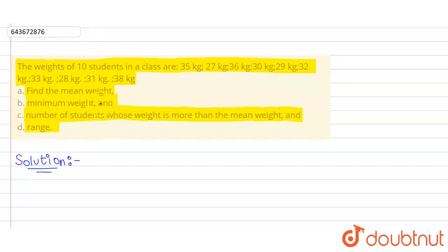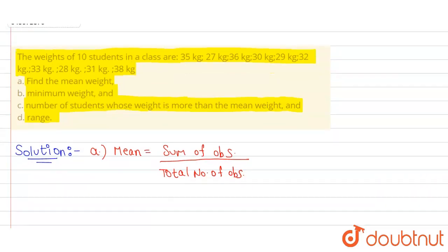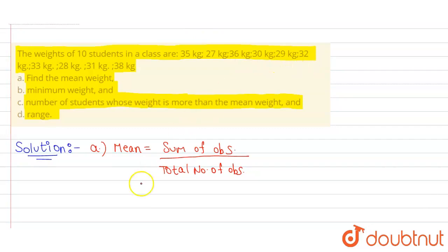First part is, we have to find mean. The formula of mean is sum of observations divided by total number of observations. Sum of observations means sum of all these numbers: 35 plus 27 plus 36 plus 30 plus 29 plus 32 plus 33 plus 28 plus 31 plus 38.